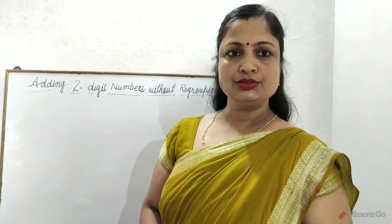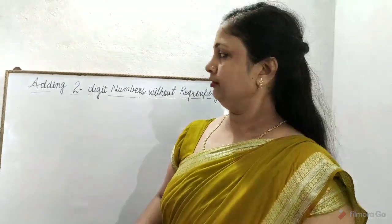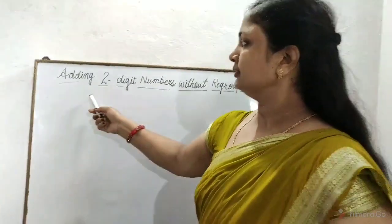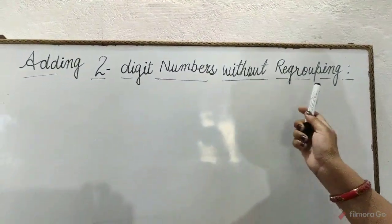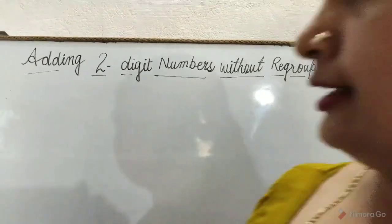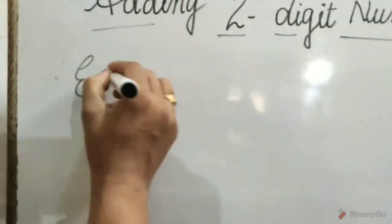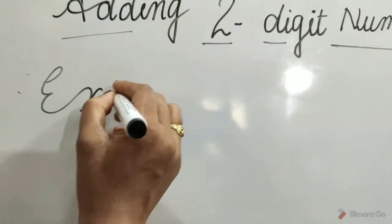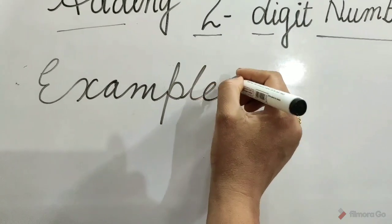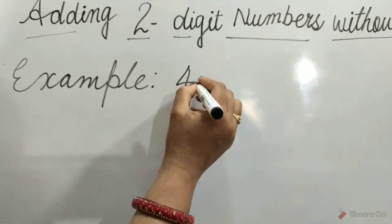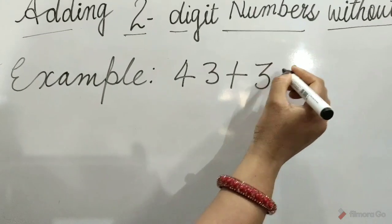Children, today we will learn how to solve adding two-digit numbers without regrouping. Let's solve example: 43 plus 32.